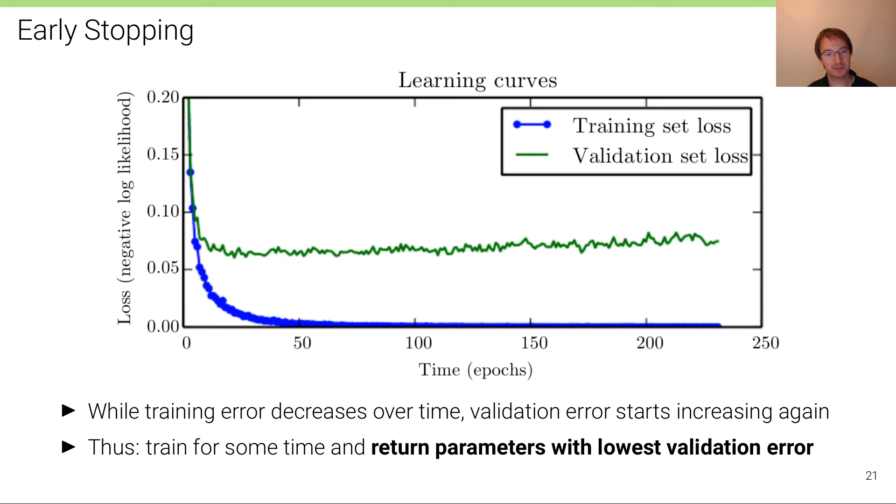Of course, we are interested in the best generalization performance, which we approximate using the validation error. Therefore, we do not want to train forever because in many cases the validation error increases. What we want to do is train for some time until the validation error increases, and then return the parameters with the lowest validation error. We want to store all these intermediate results such that we can come back to the best result after training has completed.